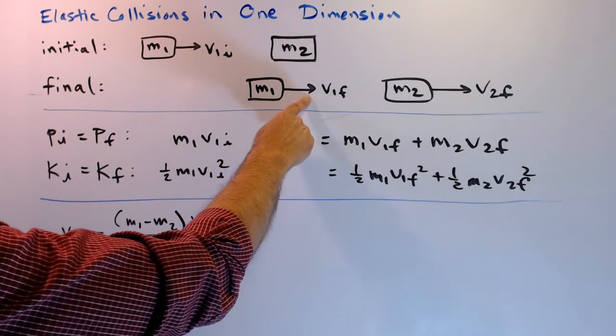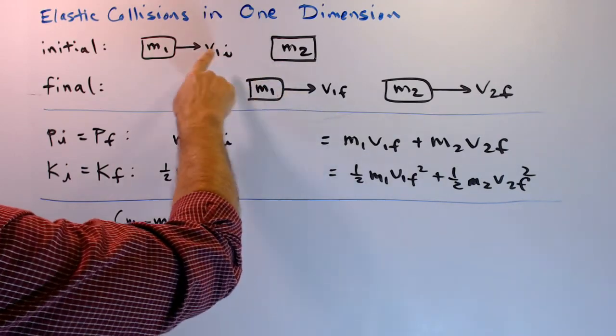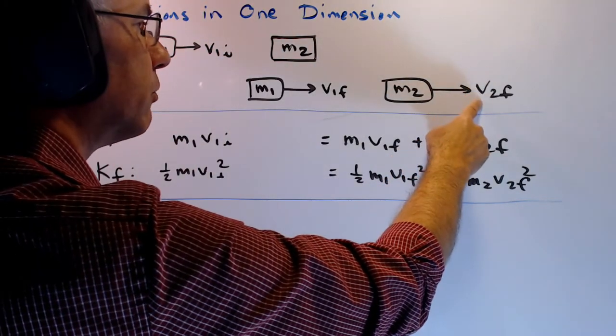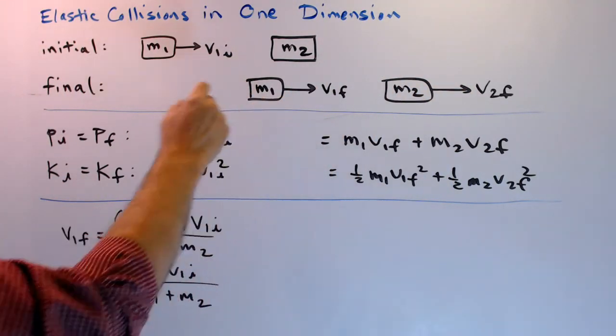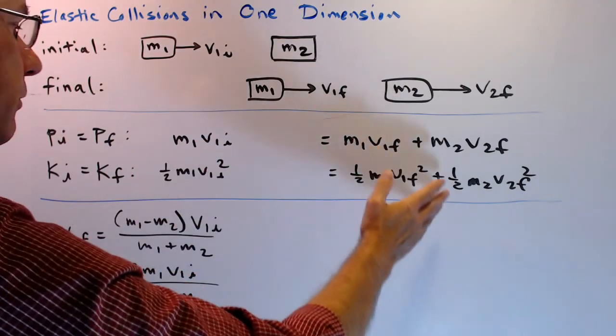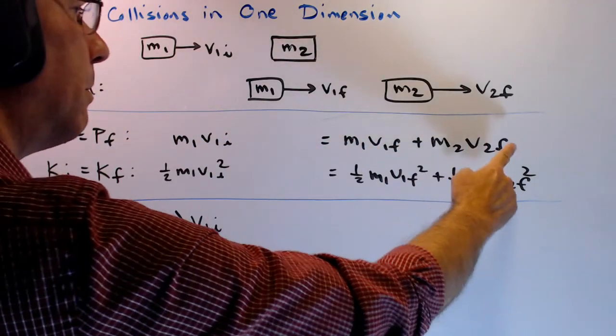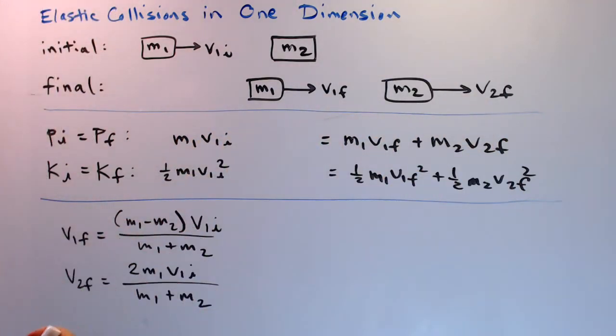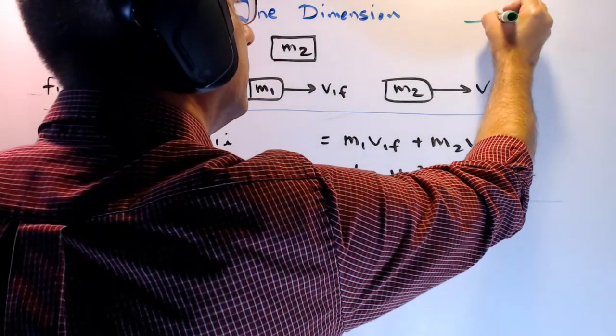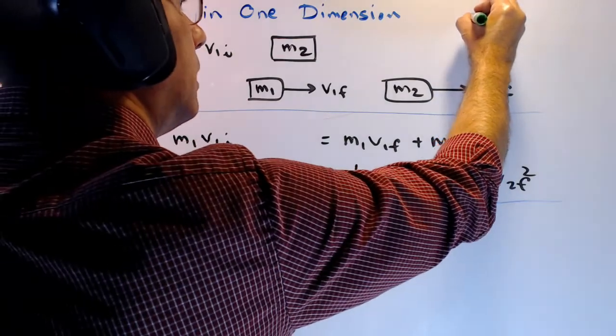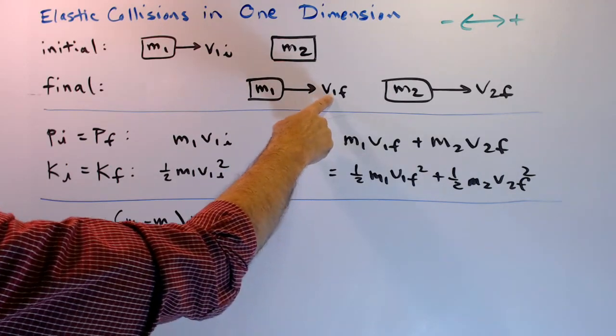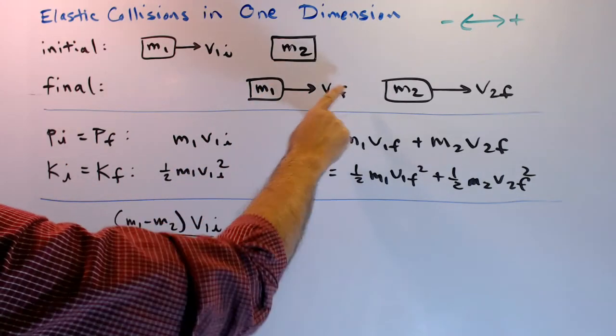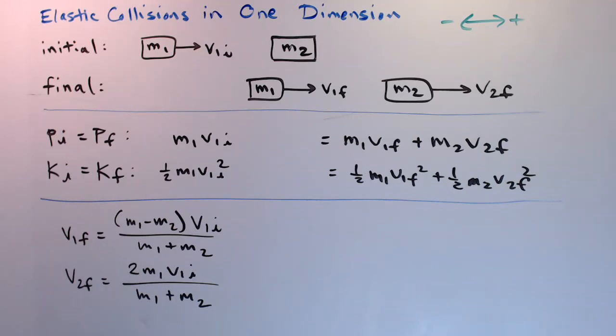Now v1 final does not necessarily have to point to the right. If v1 initial is pointing to the right, then v2 final will certainly be pointing to the right, but this might bounce off of mass two and go back to the left. But these formulas have all been written with that in mind, particularly the momentum formulas. Notice how all of these quantities are positive. I've set this up in such a way that any vector pointing to the right is necessarily a positive quantity, and any vector pointing to the left will be a negative quantity. So, if v1 final turns out to be positive, the velocity will be to the right. And it's easy to see when that would be.